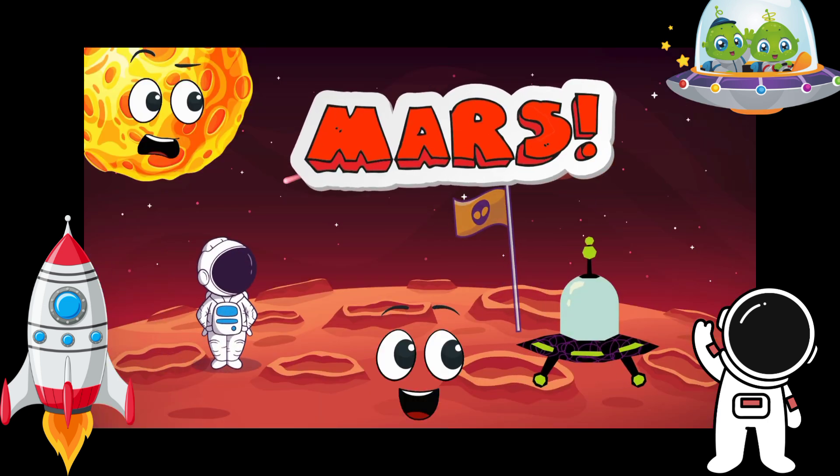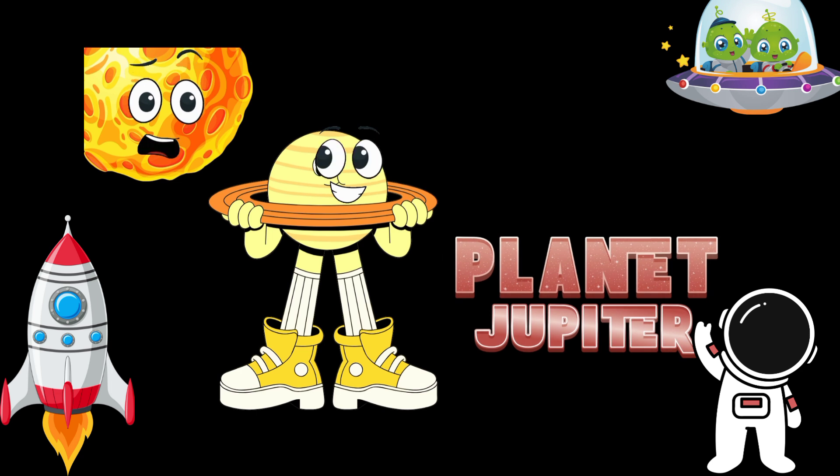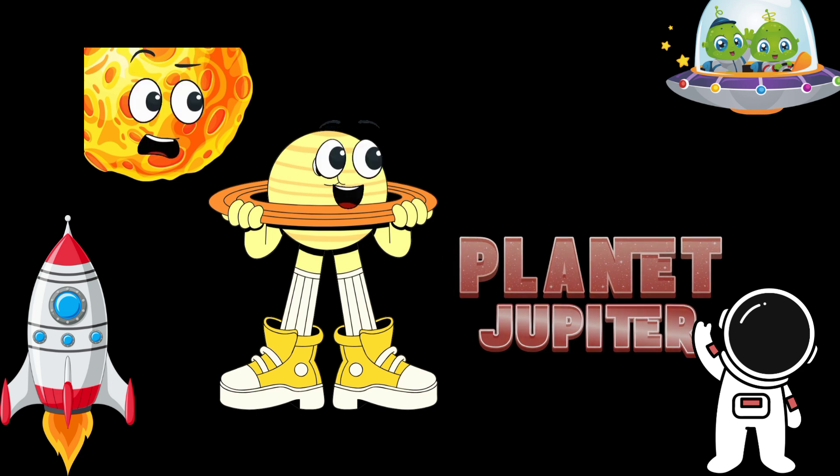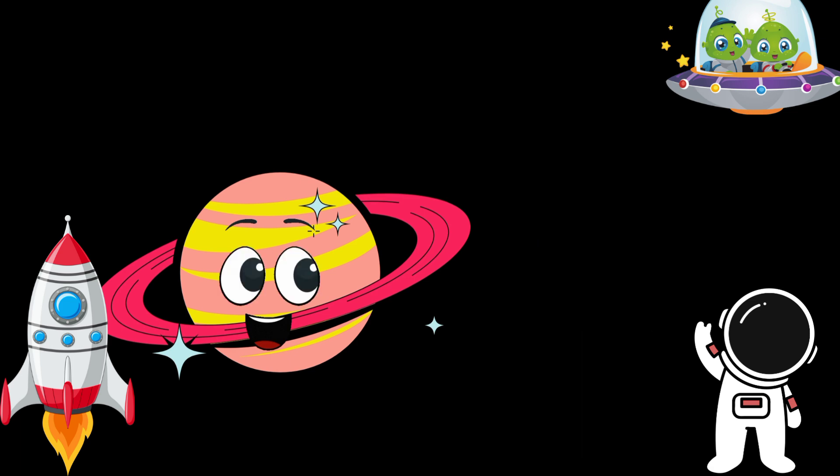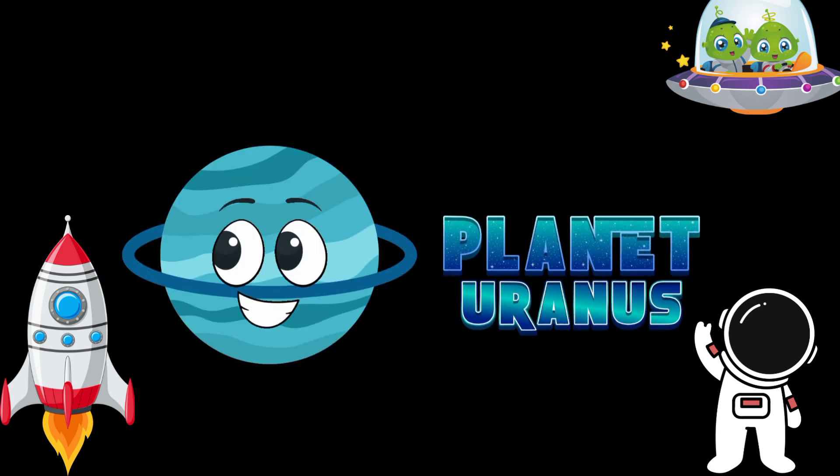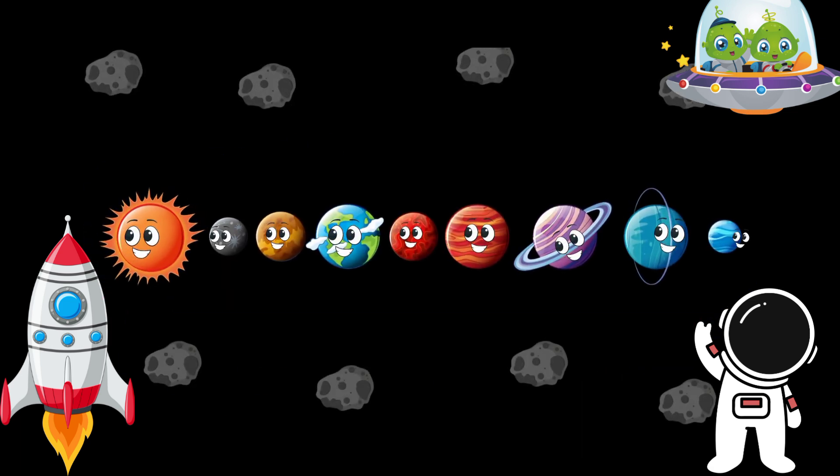Mars is red with dusty plains, Jupiter's big with swirling lanes. Saturn has rings so shiny and gold, Uranus tilts so cool and cold